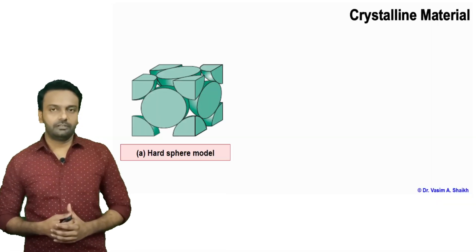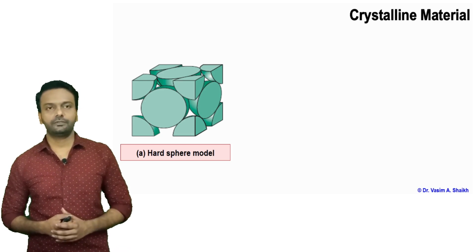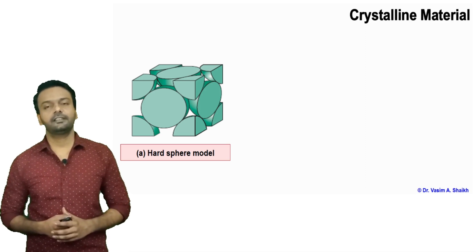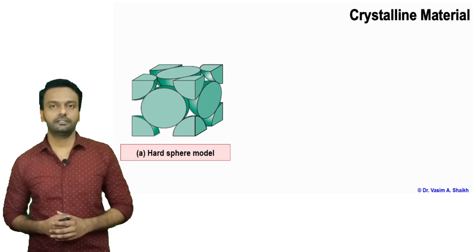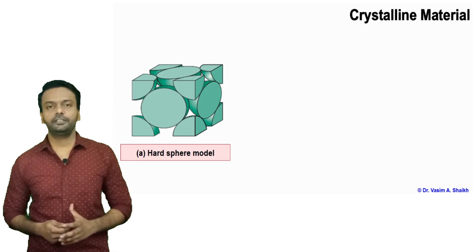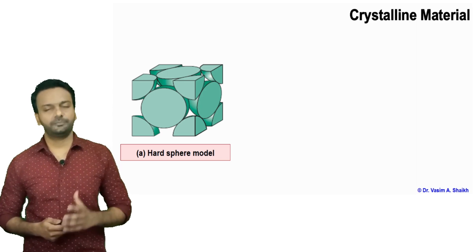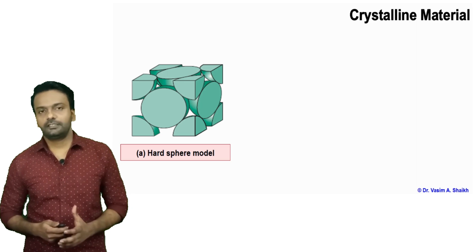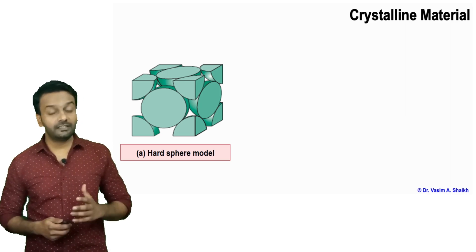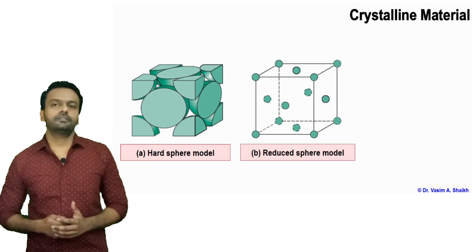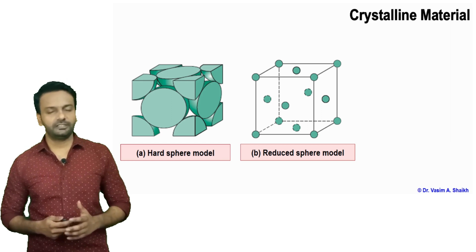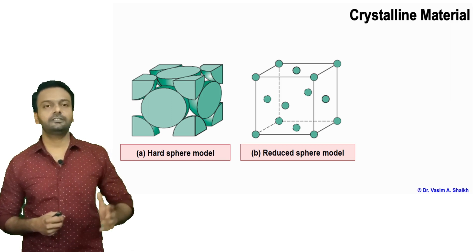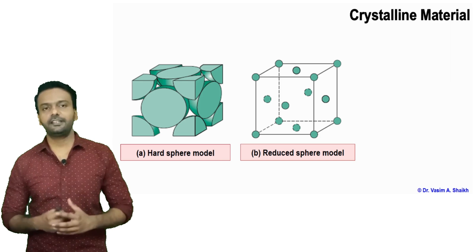Here is an example of a unit cell. This unit cell is face centered cubic. The arrangement of atoms is such that six atoms are on the faces and eight atoms are on the corners. This is the smallest repeating unit of a crystalline material. This model is a hard sphere model, meaning all the atoms are touching each other. One more model is a reduced sphere model, which is basically for our understanding.